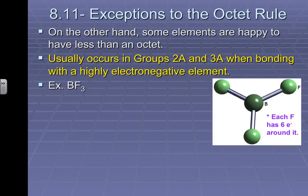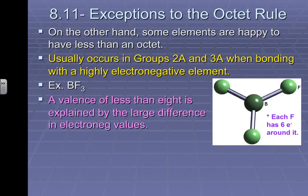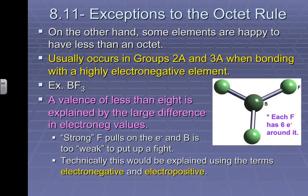In the case of boron trifluoride that you see in the picture here, this is a very typical compound. In fact, it's one you might want to actually memorize because you will see it quite often. A valence of less than 8 is explained by a large difference in electronegativity values, as we just were discussing. Additionally, the quote-unquote strong, it's electronegativity strong, fluorine pulls on electrons, and the boron is basically just too stinking weak, and it just cannot really compete with that.